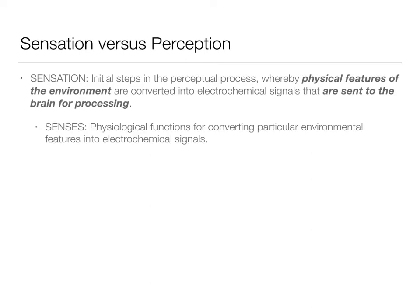The senses are those physiological functions that we have — that can be sight, audition, balance and body movement, all these different things. And these convert those environmental features — the information we're getting from the environment — into signals that our brains can understand through electrochemical signals. So what's happening with those senses is we're taking that information from our environment and putting it into a format that the brain can understand.